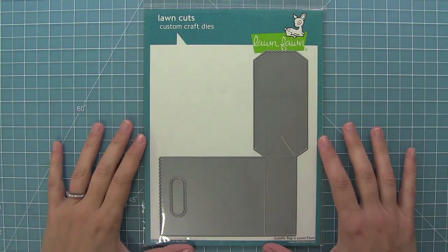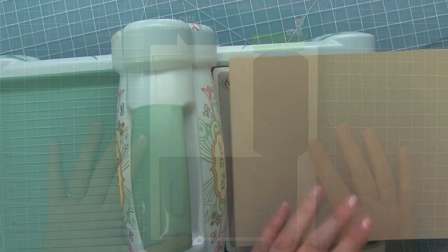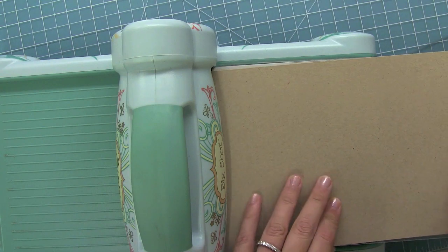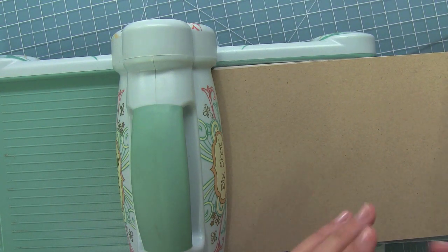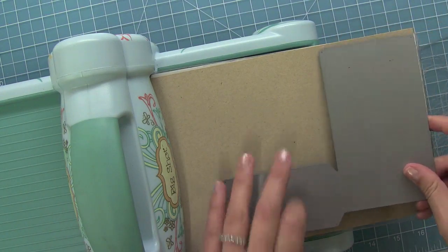Hello, this is a quick video on how to put together Lawn Fawn's brand new goodie bag die. Right here I have a piece of 6 inch by 11 inch cardstock and that's the perfect size for cutting your goodie bag. That's because you're going to have to cut the die twice.